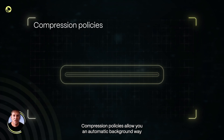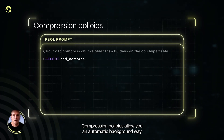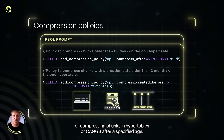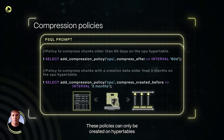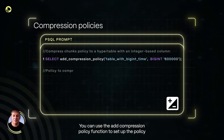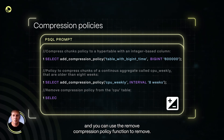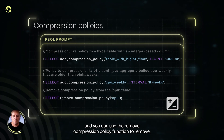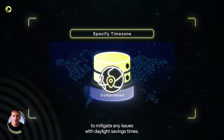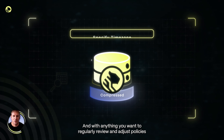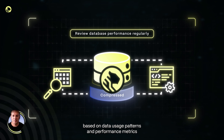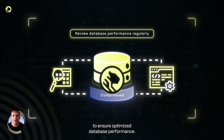Compression policies allow you an automatic background way of compressing chunks in hyper tables or CAGGs after a specified age. These policies can only be created on hyper tables or CAGGs that have compression enabled. You can use the add_compression_policy function to set up the policy and the remove_compression_policy function to remove it. You want to specify the time zone to mitigate any issues with daylight savings times, and you should regularly review and adjust policies based on data usage patterns and performance metrics to ensure optimized database performance.